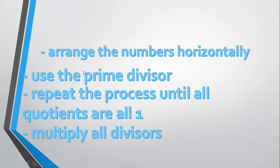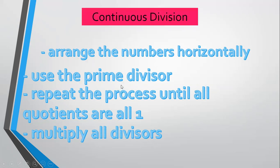Now, we are going to find the LCM. Here are the steps. First, arrange the numbers horizontally. Use the prime divisor. Repeat the process until all quotients are all 1. Multiply all the divisors. LCM means Least Common Multiple.